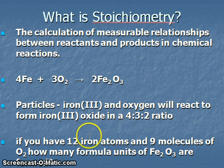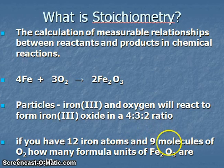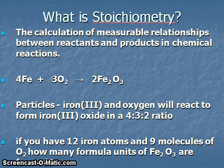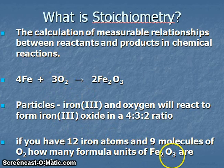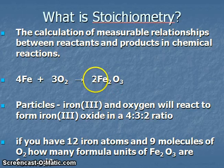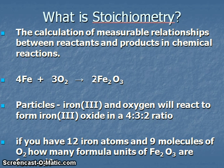So if I have 12 iron atoms, that means I have 3 times more than what's present in the balanced equation. If I have 9 molecules of oxygen, I have 3 times more than what's required to balance the equation. 3 times 4 and 3 times 3 gives me 12 and 9. So how many formula units of iron oxide would be formed? I would do 3 times 2, and that would give me the amount of iron oxide formed — it would be 6.